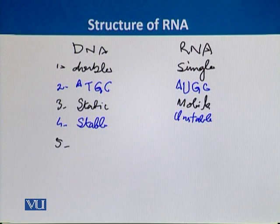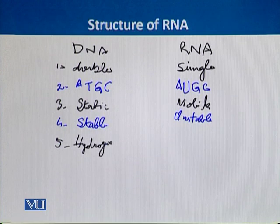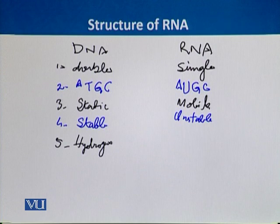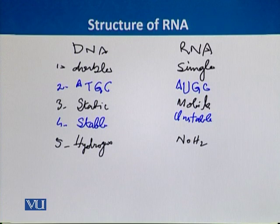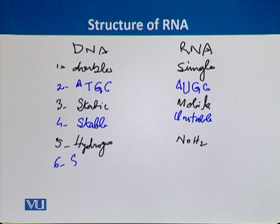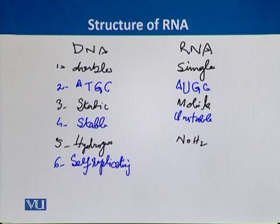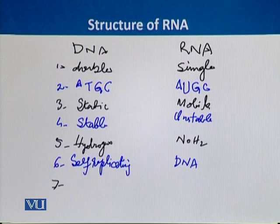Furthermore, we can see that there are hydrogen bonds in DNA, because DNA is a double helix and one strand is stabilized through hydrogen bonds between the nucleotides. On the other hand, there are no hydrogen bonds in RNA, because it is a single strand and there is no need for hydrogen bonds. Additionally, DNA is self-replicating, whereas RNA cannot self-replicate — it is synthesized from DNA. RNA is then used for the synthesis of proteins.